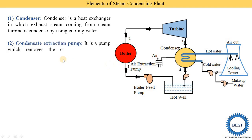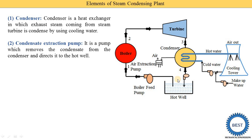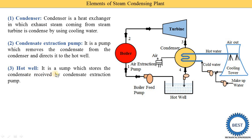The second component is the condensate extraction pump. During the cooling process, the steam is converted into water and this water is collected into the condenser. This condensate water is supplied to the hot well by using the condensate extraction pump. The third component is the hot well — it is a sump which stores the condensate received from the condensate extraction pump.